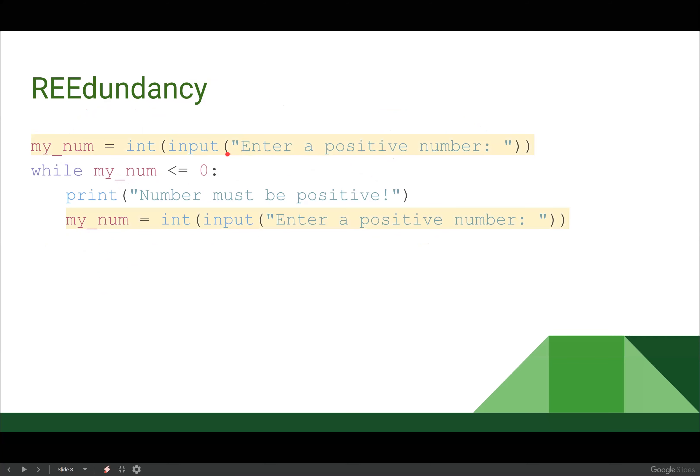And here I have redundancy. I have the exact same line of code two times, which, you know, it's fine, but anytime we can cut down on redundancy is going to be better. So how can we do this? Can we just get rid of that line? Will this code work?